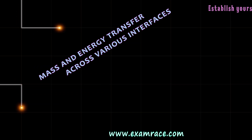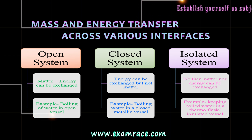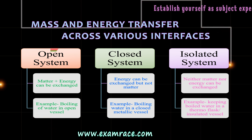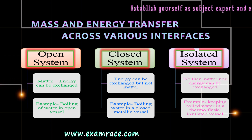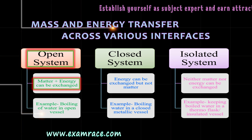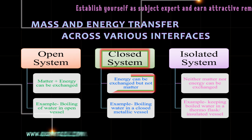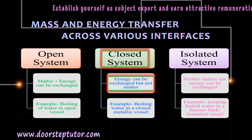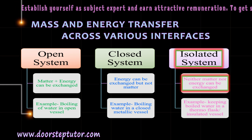The mass and energy transfer across various interfaces can be explained by three types of systems: open system, closed system, and isolated system. In an open system, both matter and energy can be exchanged. In a closed system, energy can be exchanged but matter cannot. And in an isolated system, neither matter nor energy can be exchanged.